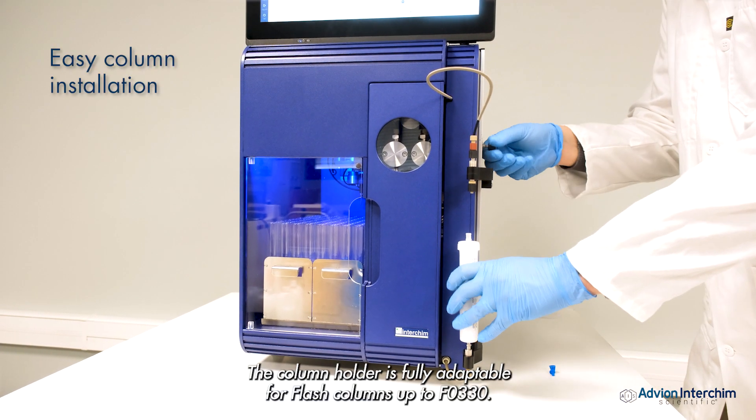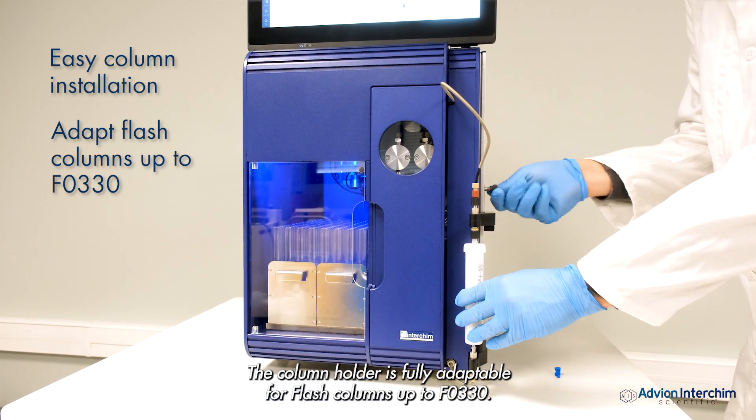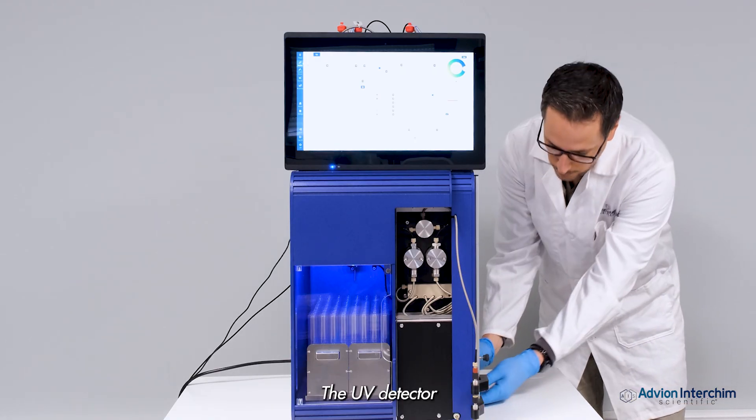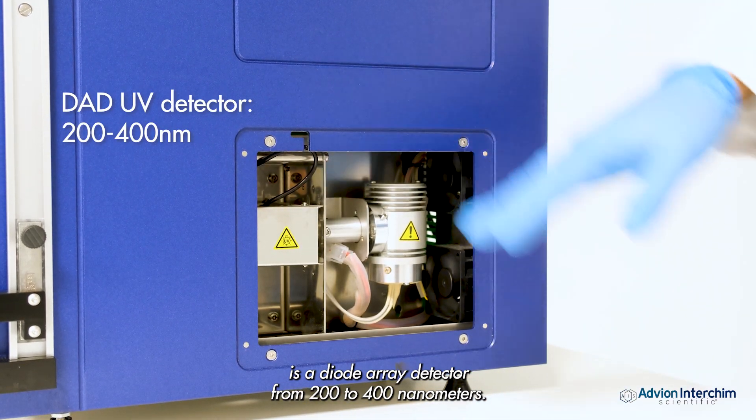The column holder is fully adaptable for flash columns up to 330 grams. The UV detector is a diode array detector from 200 to 400 nanometers.